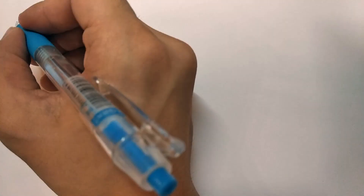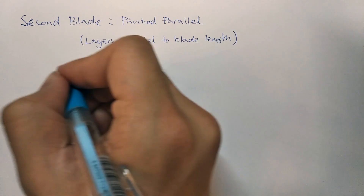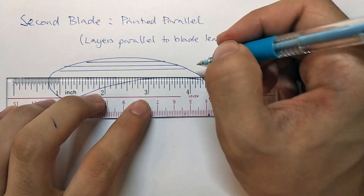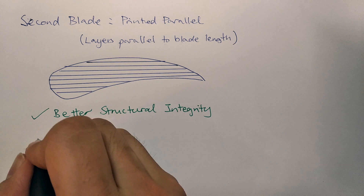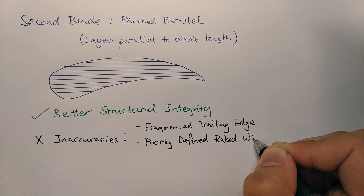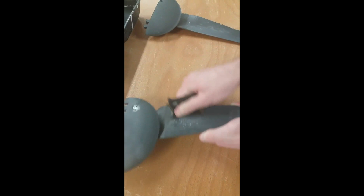We reprinted our model. In this second print, the turbine was orientated flat with an offset to the printing axis. This led to inaccuracies such as a fragmented trailing edge that required repairs, and a raked wing tip that did not match the vector file. The surface was noticeably rougher, so it was sanded to be as smooth as possible to ensure laminar flow, reducing skin friction.